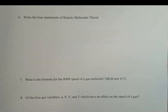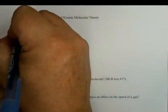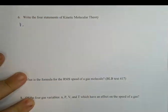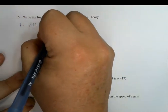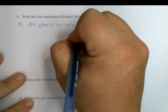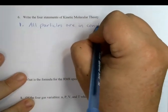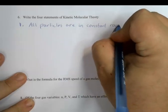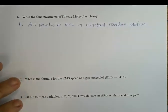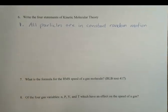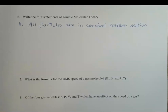The next question is to write the four statements of kinetic molecular theory — that's on page 9 of your notes. Number one: all particles are in constant random motion. That means there's no predictable motion — they're not moving in circles or always in a straight line. Everything about their motion is random, and a gas particle never comes to a standstill.